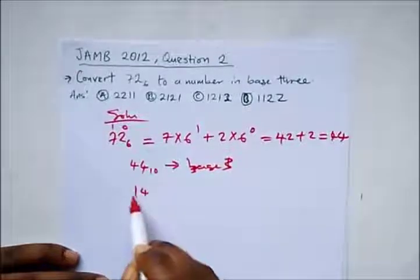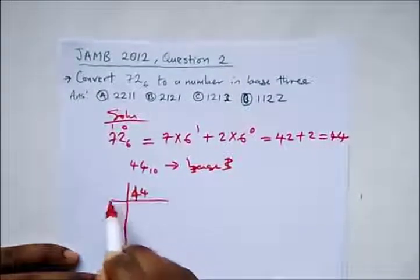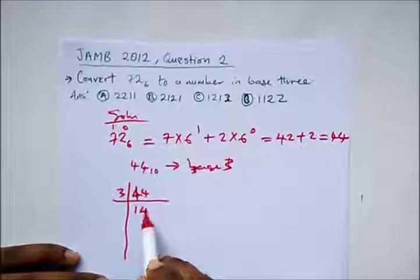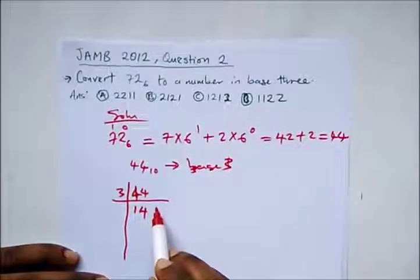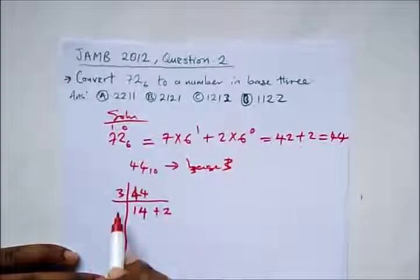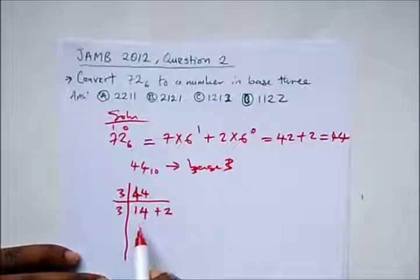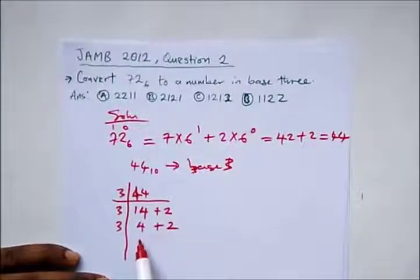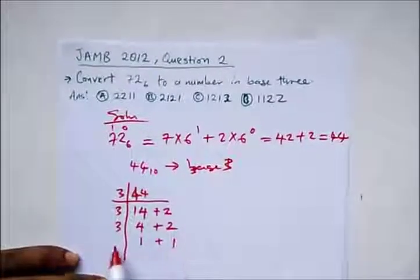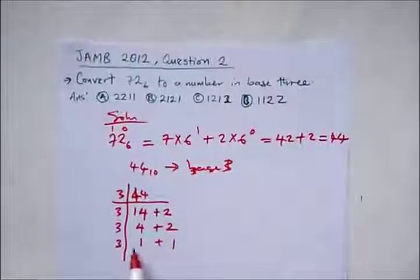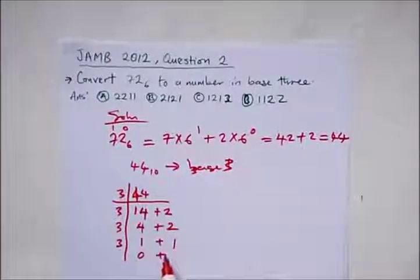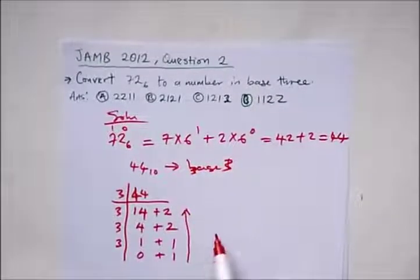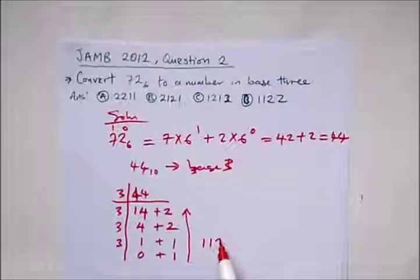We have 44, draw a line, we divide. 3 into 44 gives us 14 times with a remainder of 2. 3 into 14, that's 3 into 12, gives us 4 remainder 2. 3 into 4 is 1 remainder 1. And 3 into 1 is 0 plus remainder 1. We take our answer in the reverse direction, so we have 1122 in base 3. Our correct option here is option D.